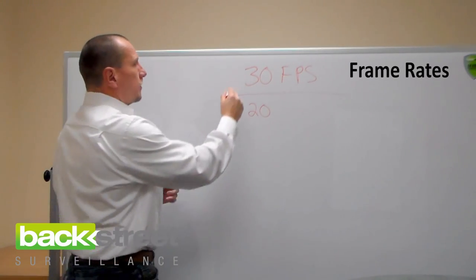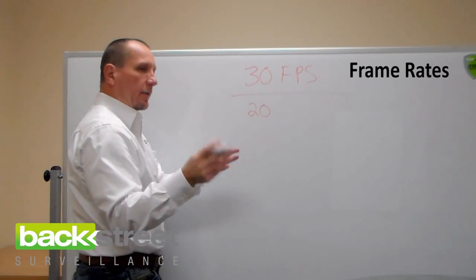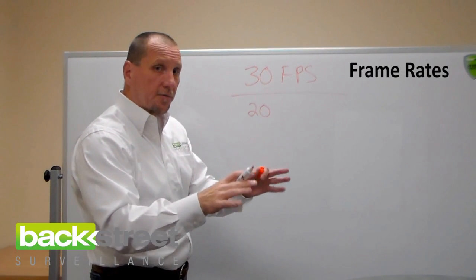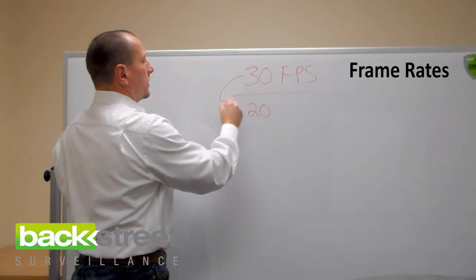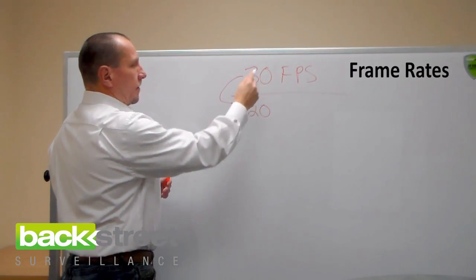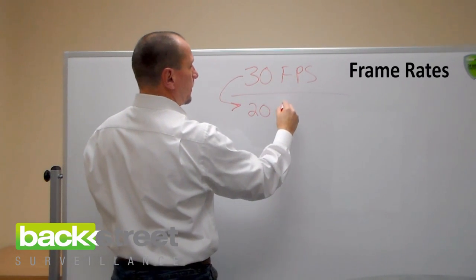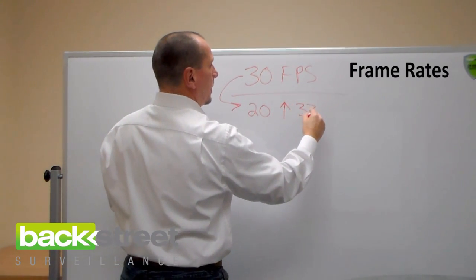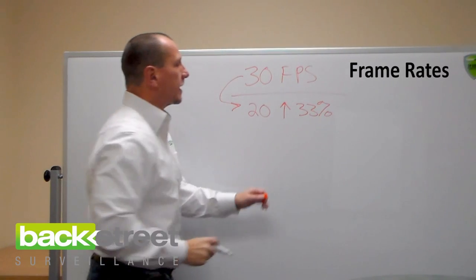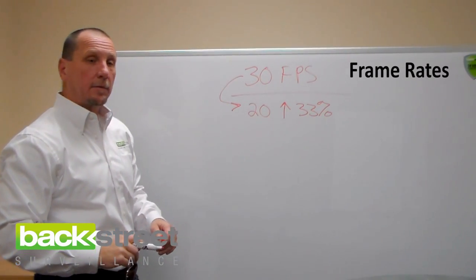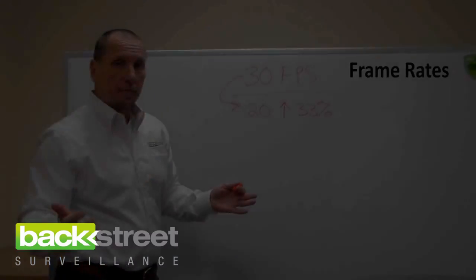What that means is you can go into a camera and a surveillance system, a professional surveillance system, and reduce the frame rate from 30 down to 20 and you increase the total days you can store for that camera 33% and you didn't give anything up.